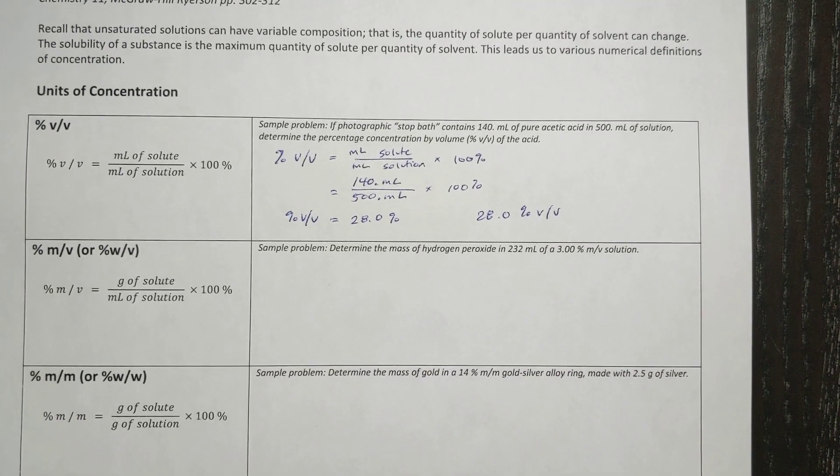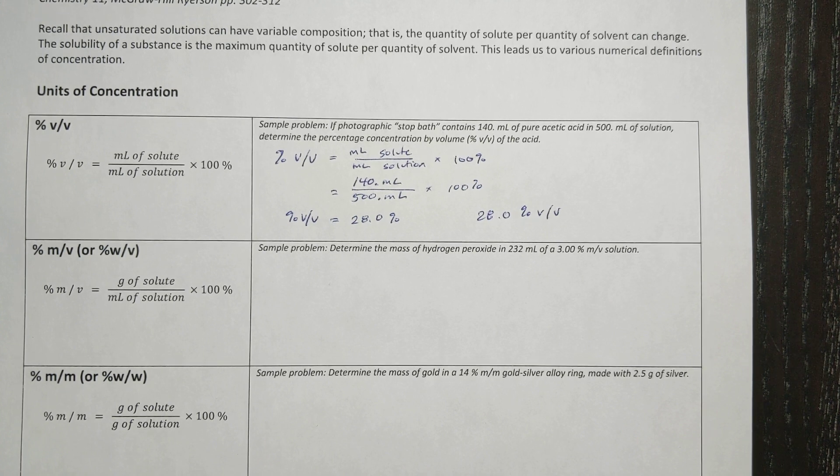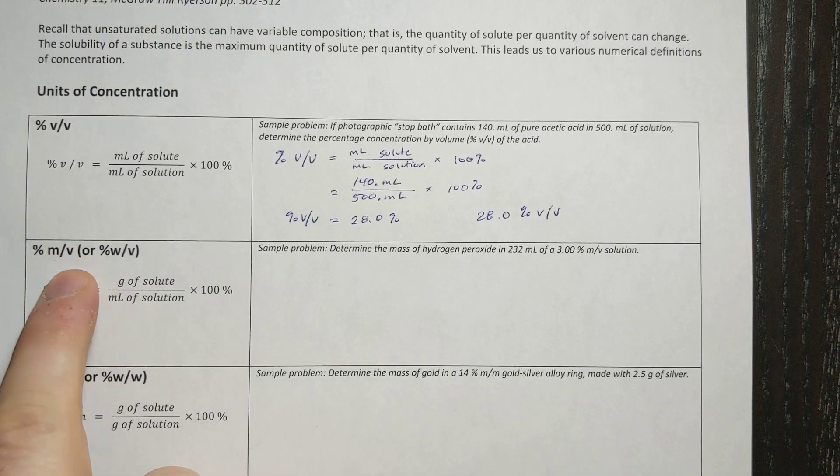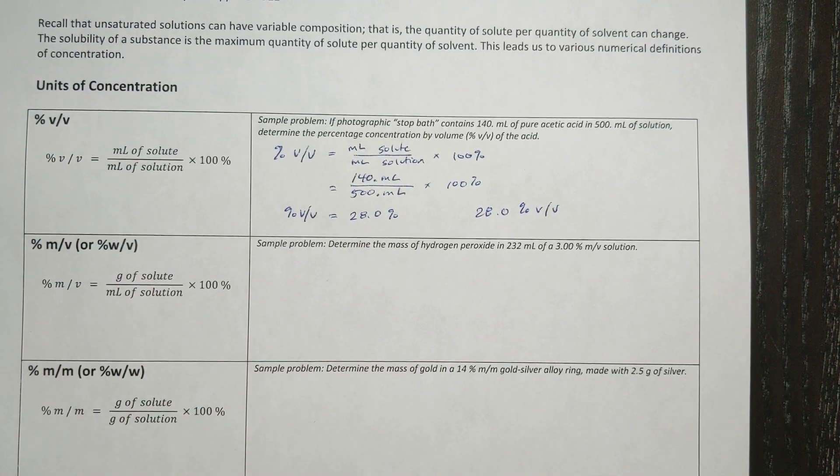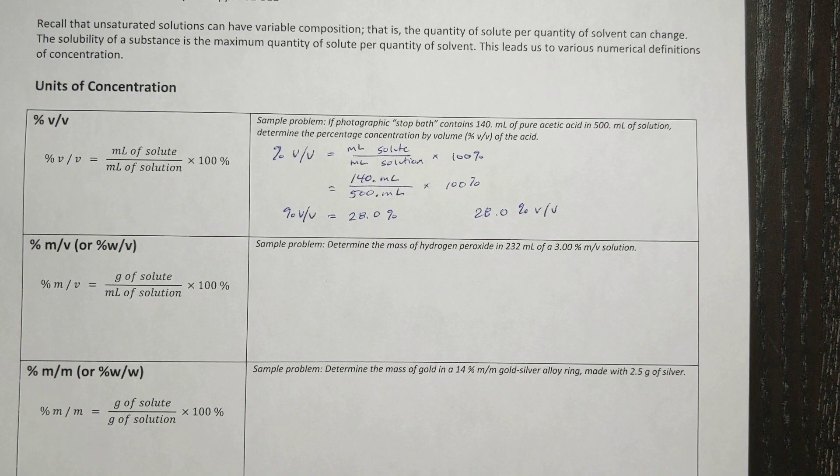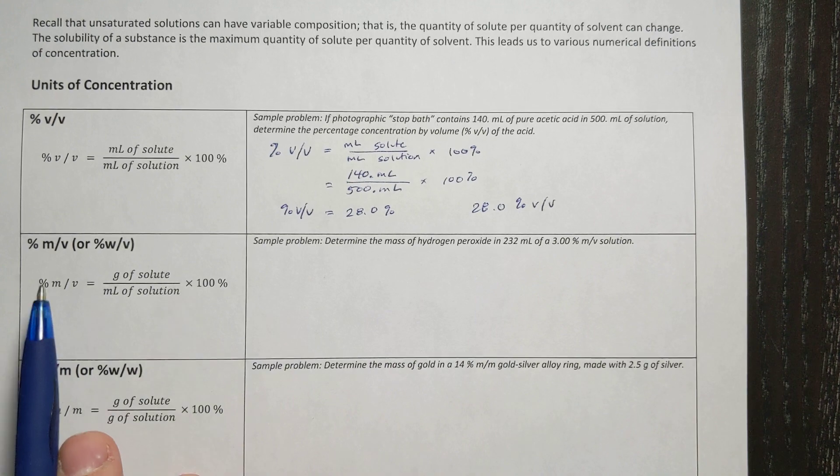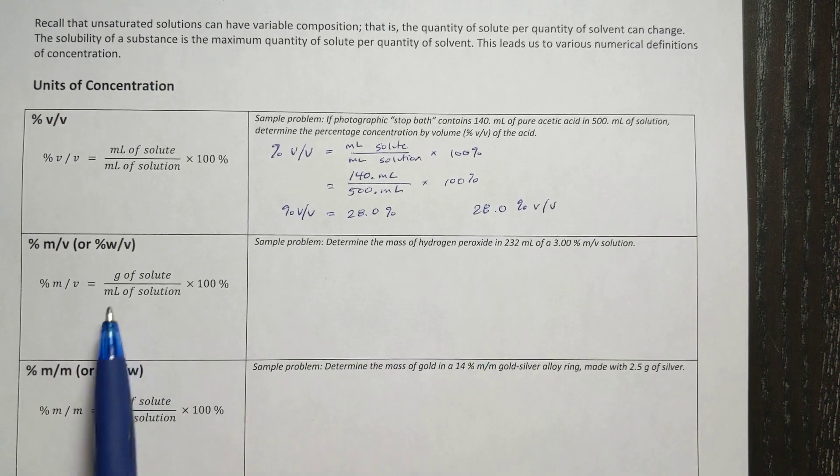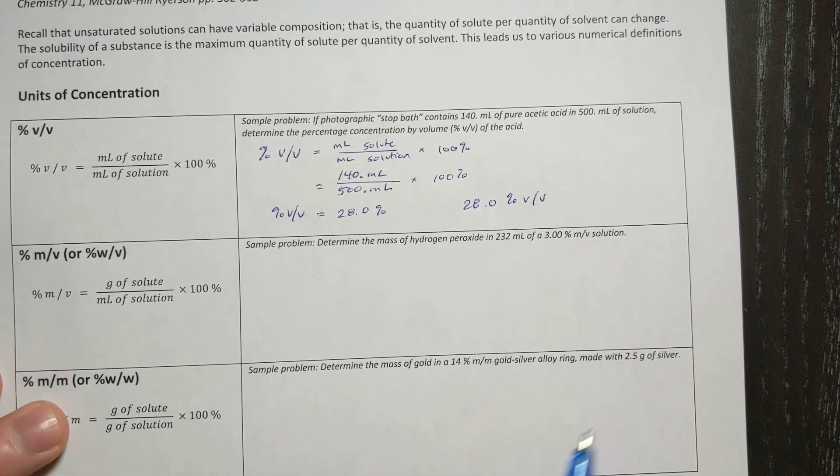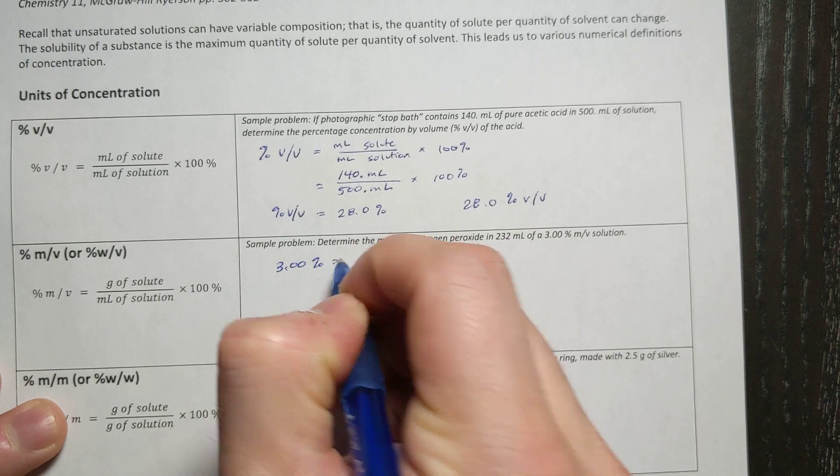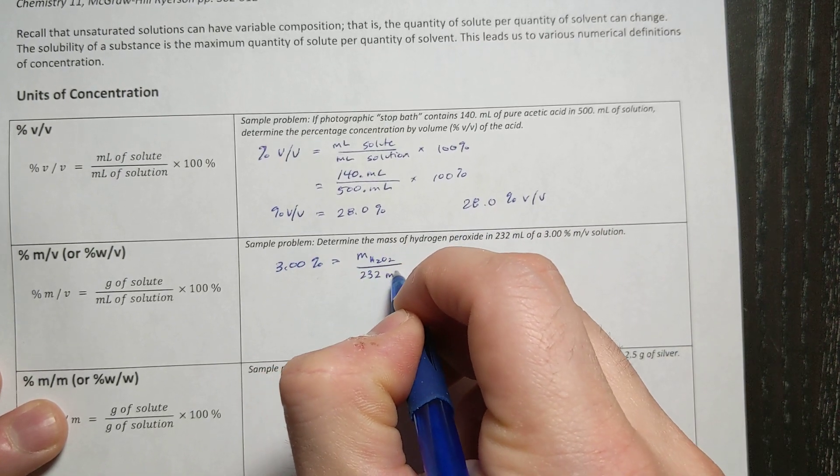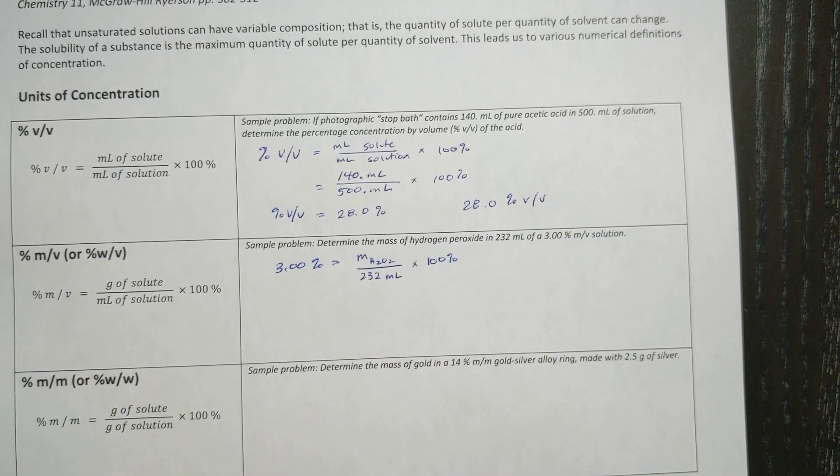The next one is determine the mass of hydrogen peroxide in 232 milliliters of a three mass per volume solution. So we're going to use mass over volume, so grams per milliliter of solution. So this one will go as follows: grams of solute over milliliters of solution times 100%. So in this case, I have the percentage. I have the milliliters of solution and they want me to find the mass of the hydrogen peroxide. So what I'm going to do is I'm going to say 3.00% is equal to the mass of the hydrogen peroxide over 232 milliliters times 100%.